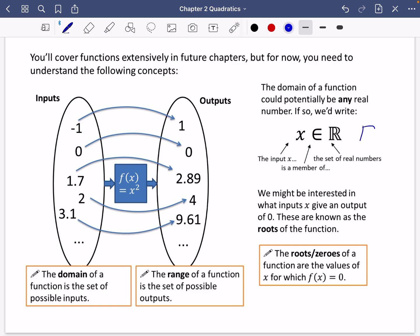The way you write that r is you just do a capital letter r and draw an extra line through it like this. We might be interested in what inputs x give an output of 0. These are called the roots of the function. We're often interested in what things give us an output of 0.